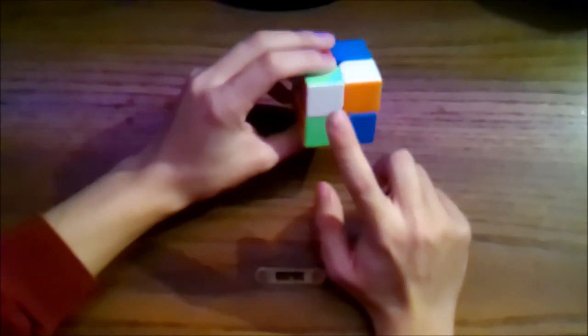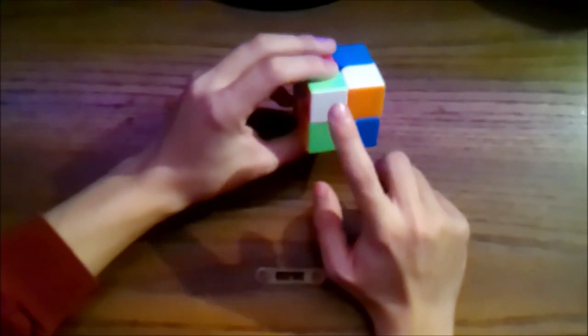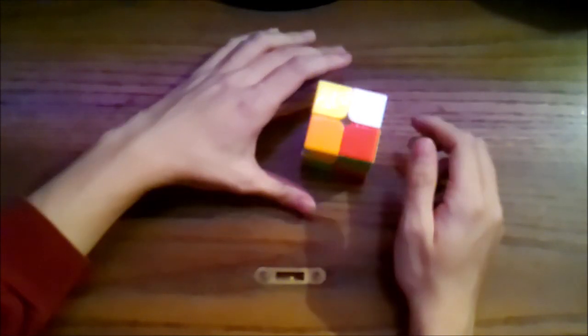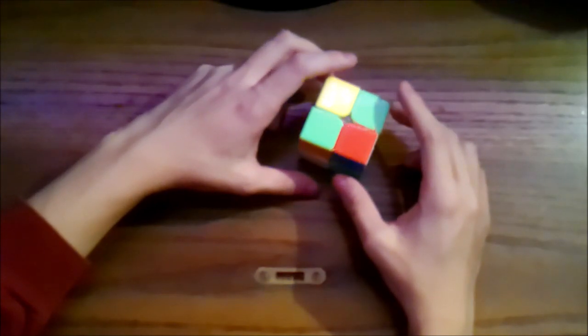So for example, if you want to solve the white side of the cube, you'll want all 4 stickers on that side to be white. Now let's move on to the first step of the solving process, the white cross.